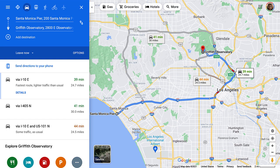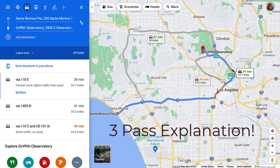This is a map of Los Angeles. I want to route from Santa Monica to Griffith Observatory. Google estimates it'll take 39 minutes. But how does it do this? That's exactly what we'll be looking at today. This is going to be a three-pass explanation where we start with the big picture and drill down into the details. So buckle up.